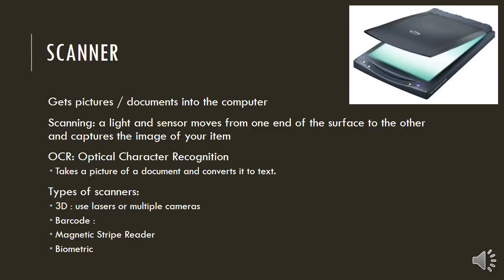A scanner will get pictures or documents into your computer. To do the scanning, there's a light and a sensor that move from one end of the surface to the other and capture the image of your item. There's special software called OCR — optical character recognition — which can take a printed document and create a Word document that you can edit. It takes a picture of a document and converts it to text.